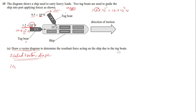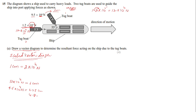Choose a scale of 1 cm = 2×10⁴ N. With this scale, the 12×10⁴ N force is drawn as a 6 cm arrow, and the 9.5×10⁴ N force is drawn as a 4.75 cm arrow — which you can round to 4.8 cm, since 4.75 is difficult to draw exactly.